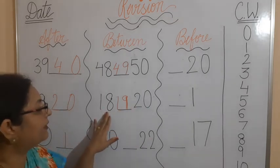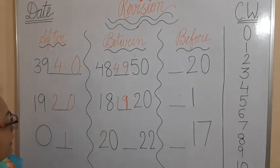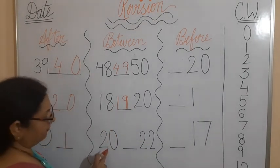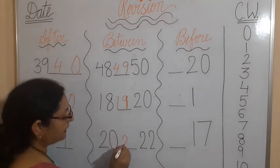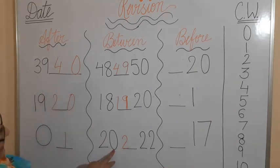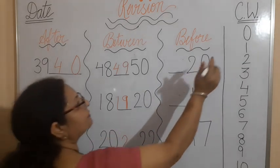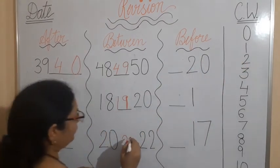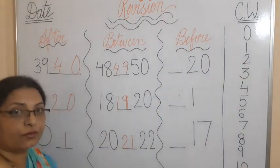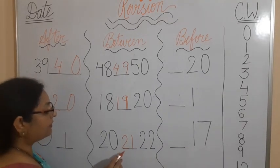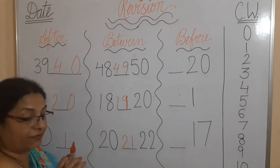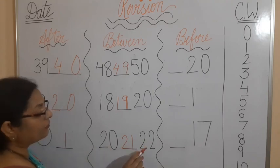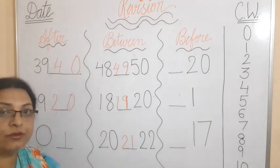So see the next example: 20. What will you do here? The first digit will remain same. And you have to see the second one: 0. What comes after 0? 1. You have to write 1. It becomes 21. 21 is between 20 and 22. Did you understand students? Okay.